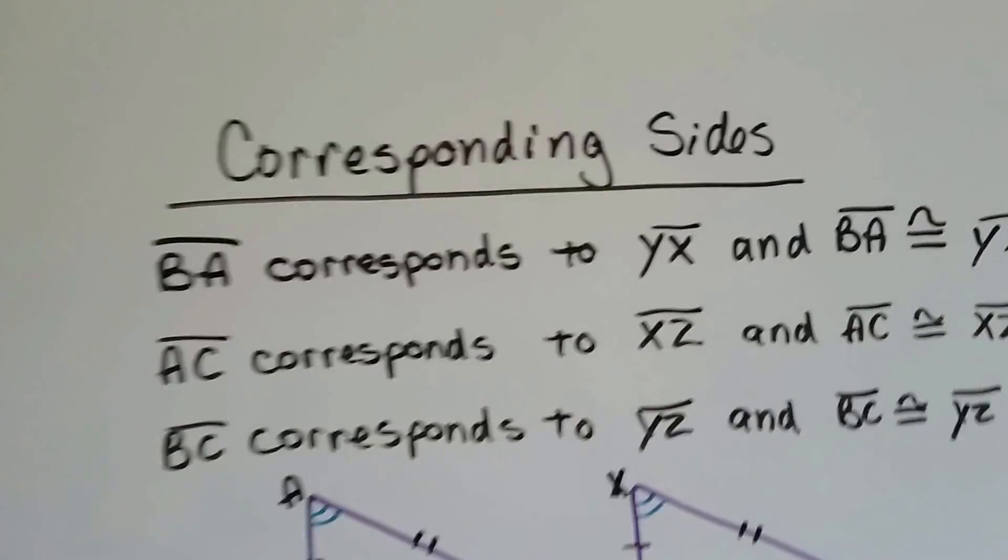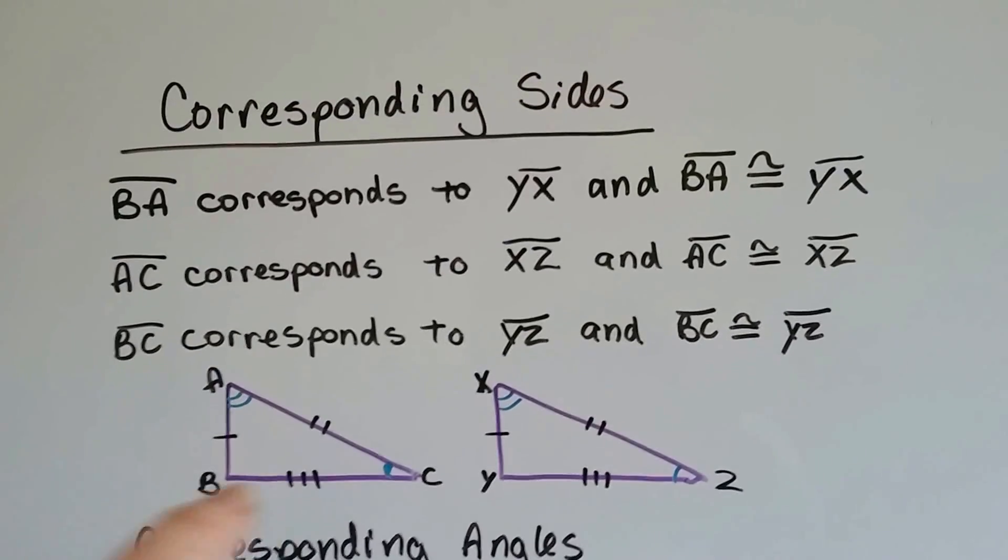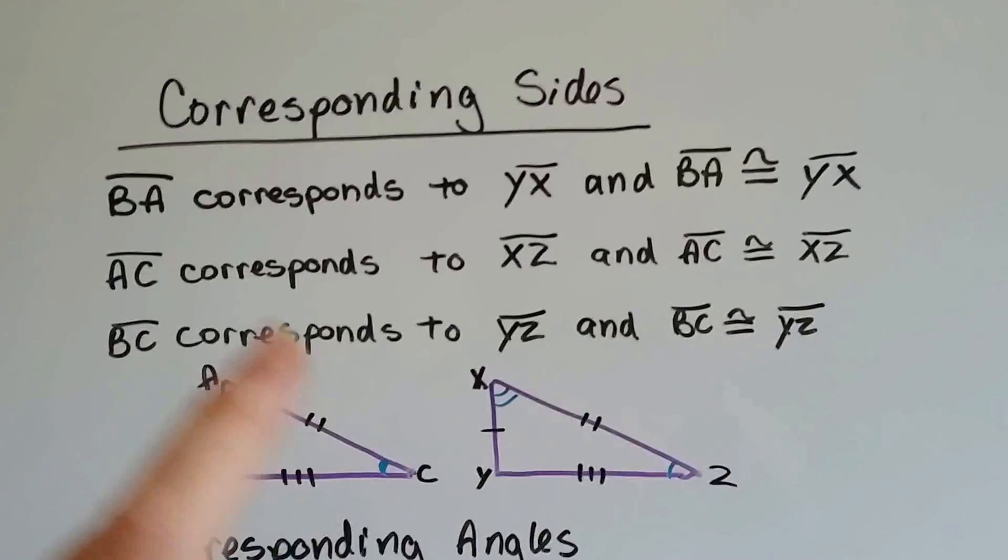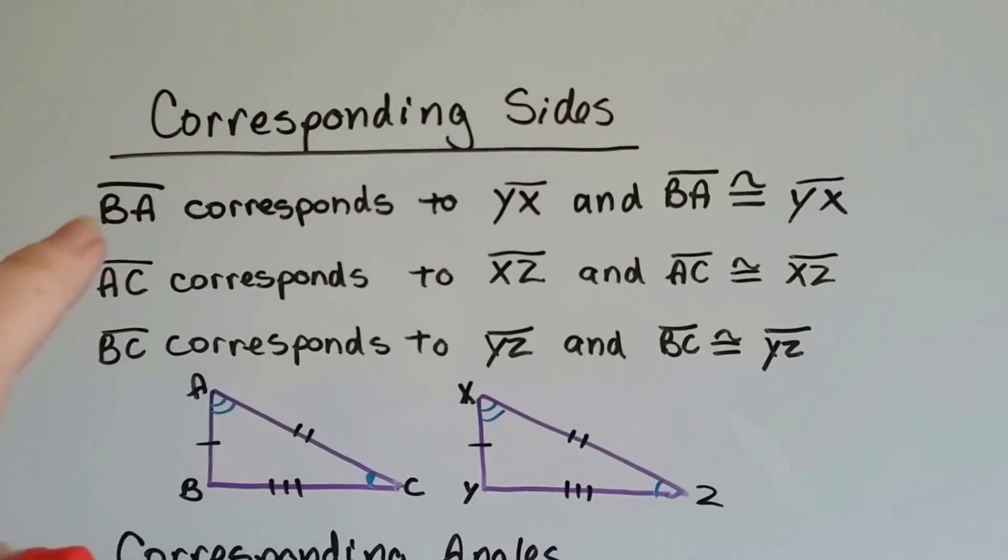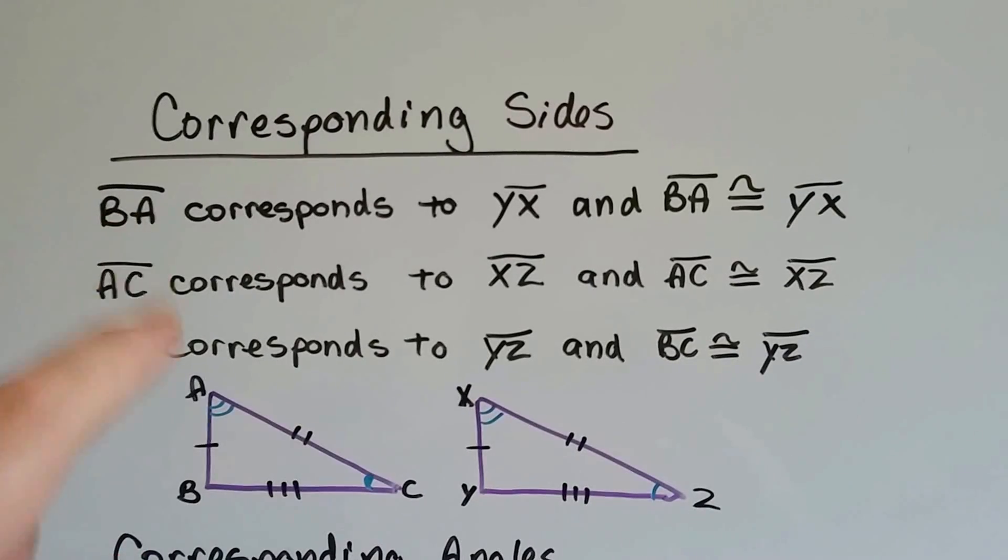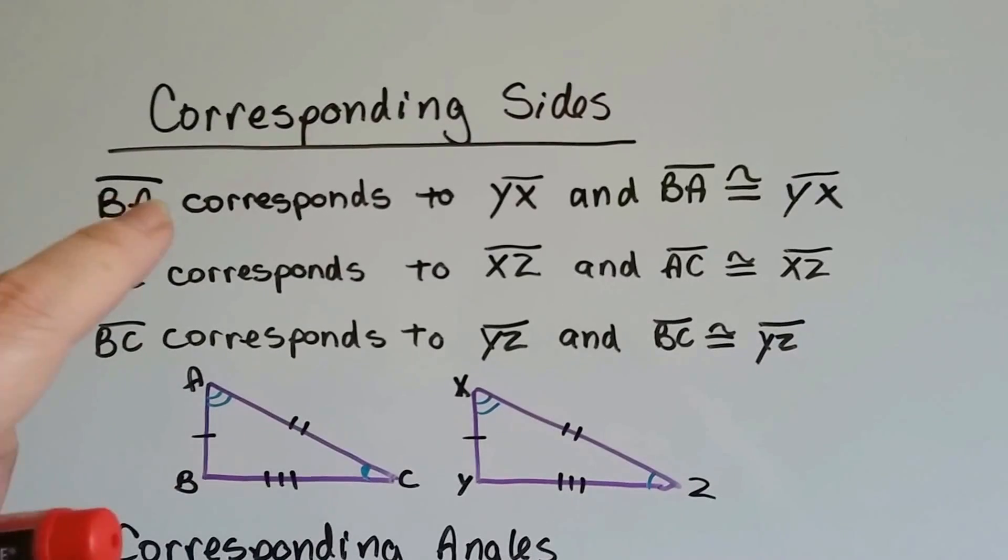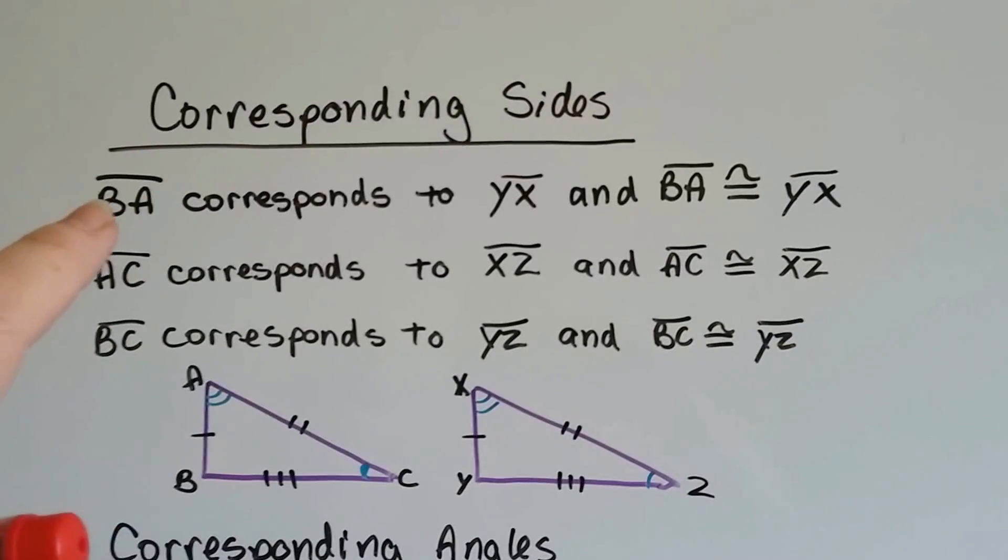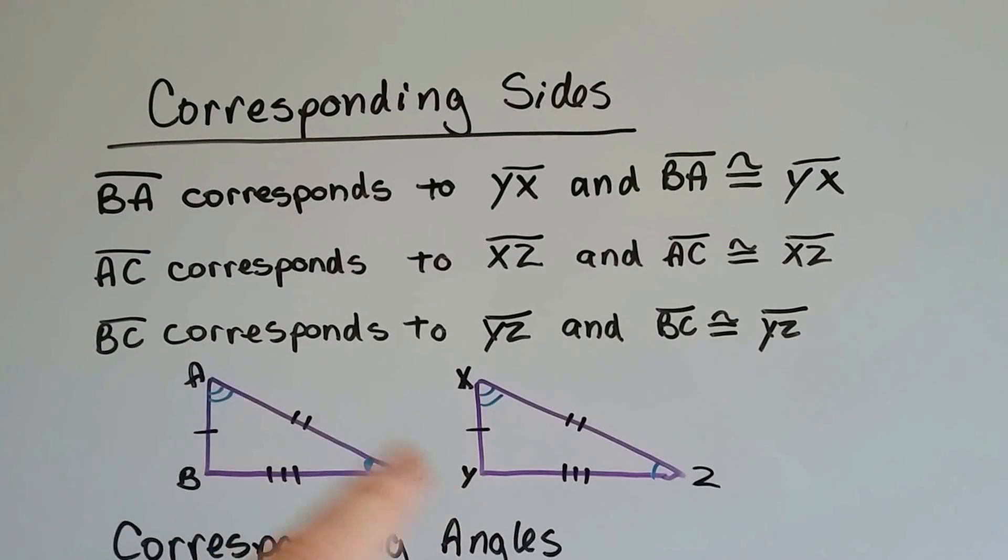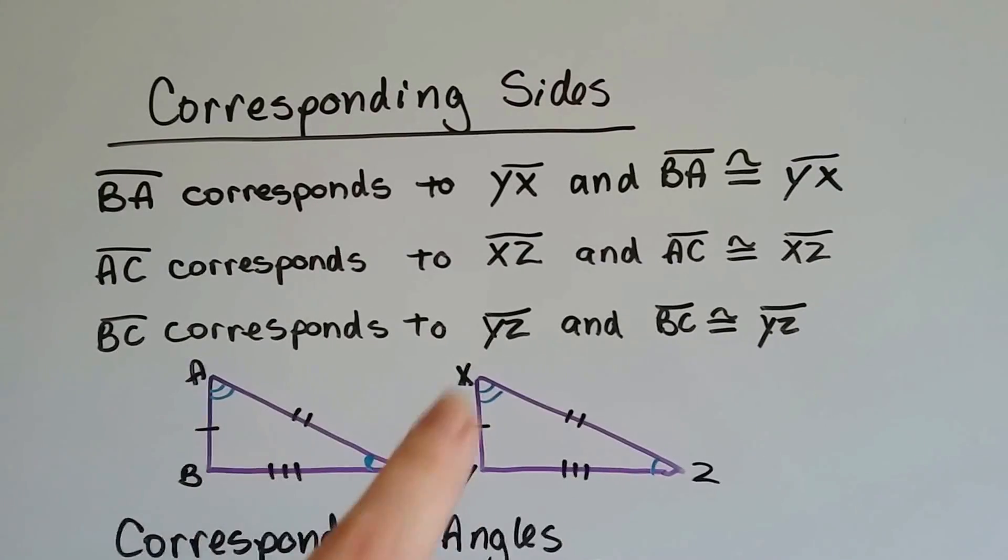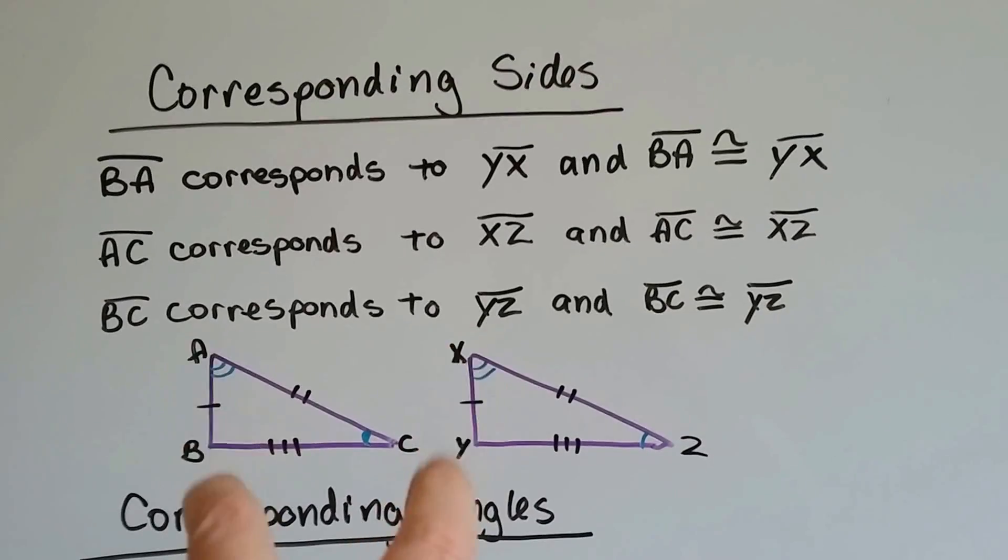So corresponding sides. Look at these two triangles. We have triangle ABC and XYZ. Line BA, remember that's from last year, that's how you write it. You write BA right here, or AB, it doesn't matter. And you put a line over the top of it and that means line AB. It corresponds to YX right here. They both have the one tick mark. And BA is congruent to YX. These two are congruent.